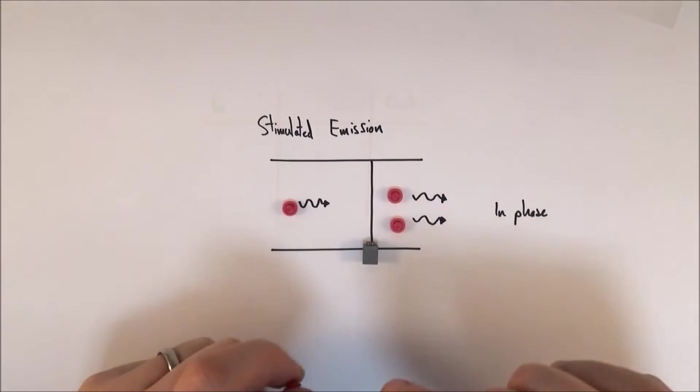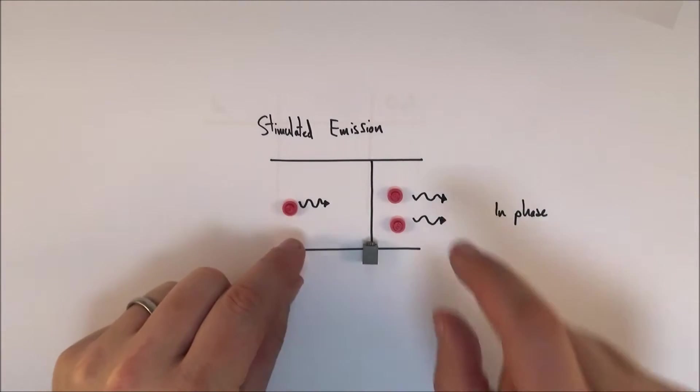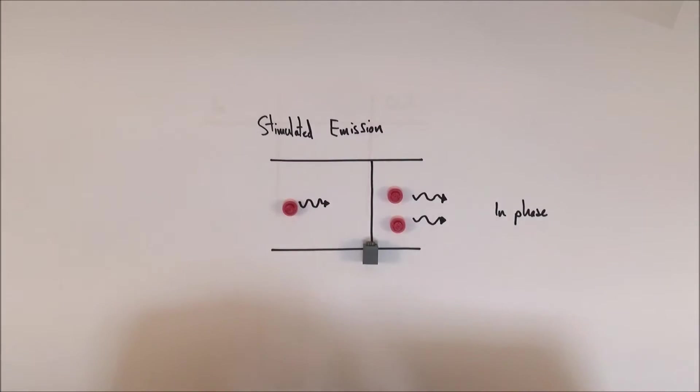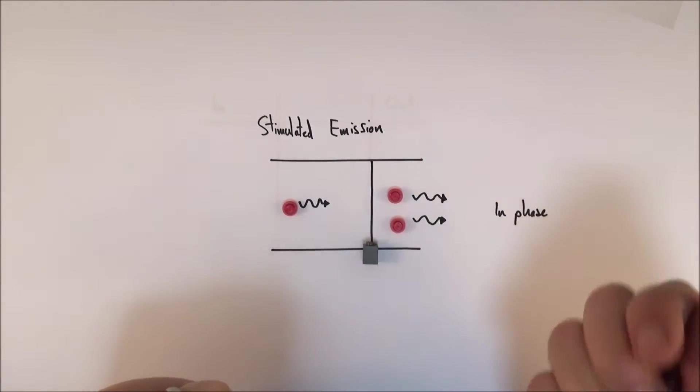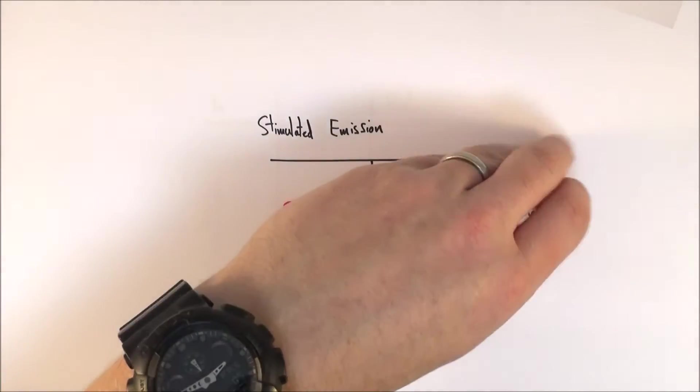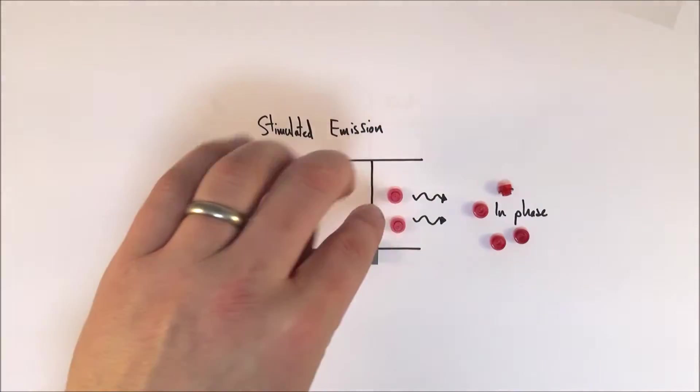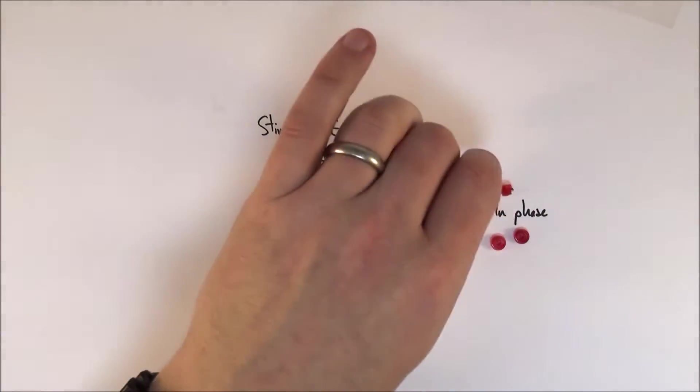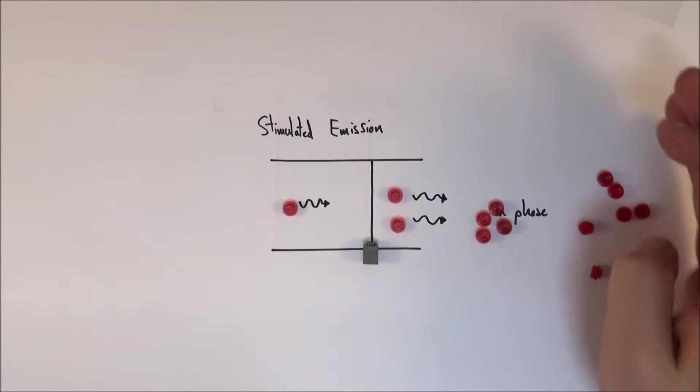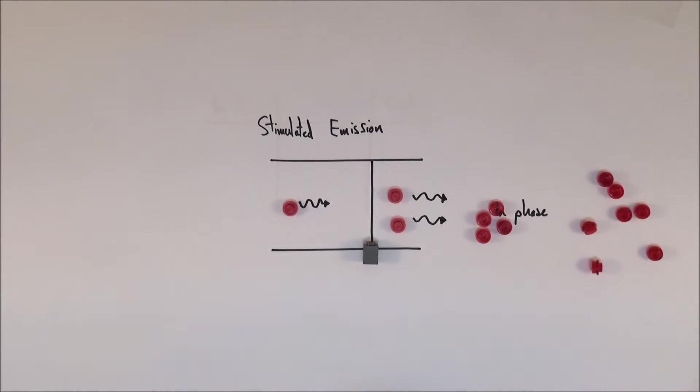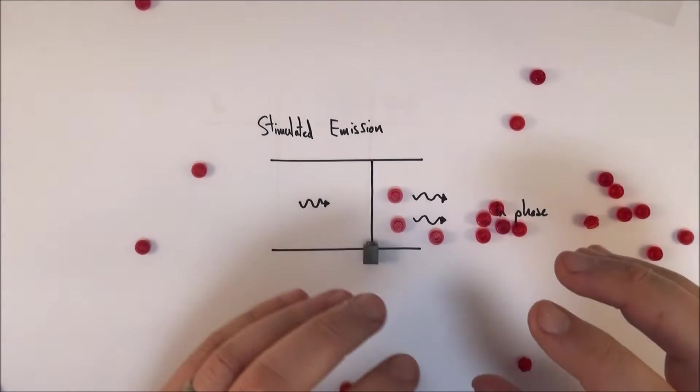Now when you have this stimulated emission of radiation, one photon comes in and two photons are given out. These two photons can travel and perhaps produce another four photons because each one could cause its own stimulated emission. These four go off and cause eight, and very soon you get a huge amount of photons given off because of this massive increase. That's what we want inside a laser.